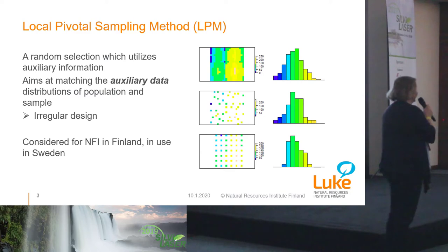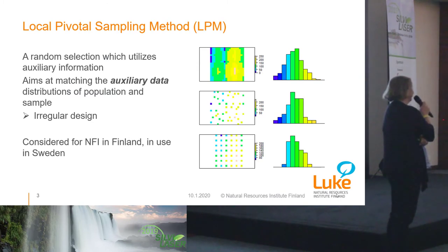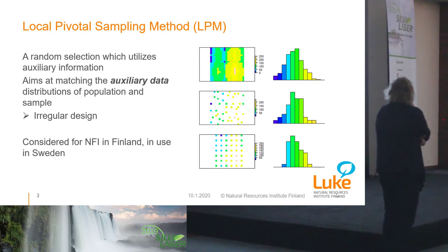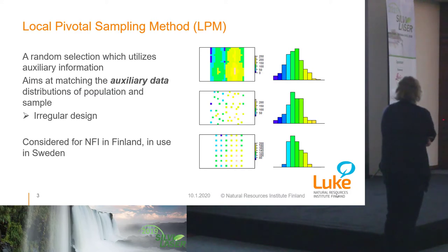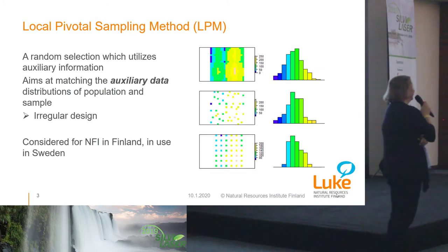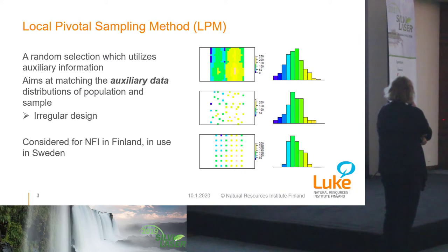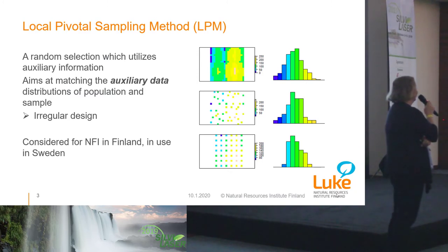On the right-hand side is a small example. On the top is the population with three auxiliary data variables: for each pixel on that picture, we know its location — X and Y coordinates — and on top of that we have prior information of the growing stock in each pixel. With the histogram you can see the distribution of this growing stock variable over the map. Below it, in the middle, is a sample chosen with the LPM, and in the bottom is a traditional systematic sample. From the histograms on the right-hand side you can see that the LPM sample has captured better the distribution of the volume auxiliary data than the systematic design.